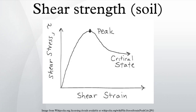Shear strength is a term used in soil mechanics to describe the magnitude of the shear stress that a soil can sustain. The shear resistance of soil is a result of friction and interlocking of particles, and possibly cementation or bonding at particle contacts. Due to interlocking, particulate material may expand or contract in volume as it is subject to shear strains.